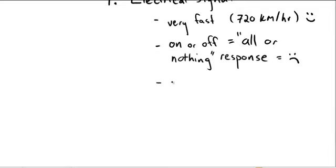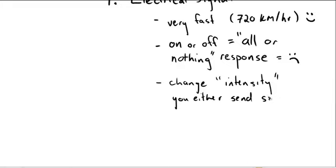If we want to change the so-called intensity, so you feel more or less pressure, more or less pain, it's not changing the degree of the electrical signal. To change intensity, you either send the signal more often or through more neurons.